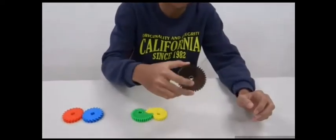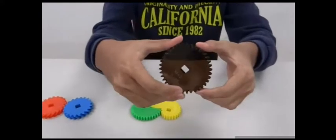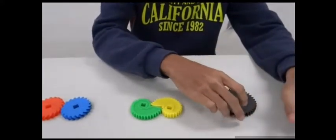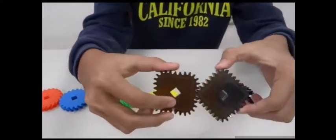齒輪 (Gears): We have 正齒輪 (spur gears) and 方形齒輪 (square gears).